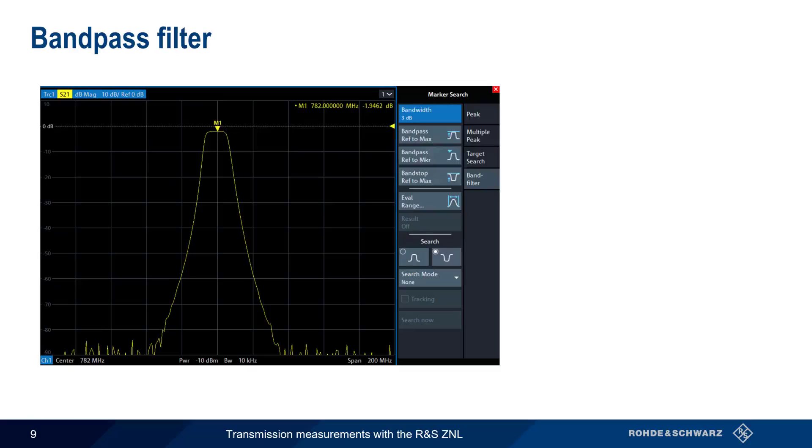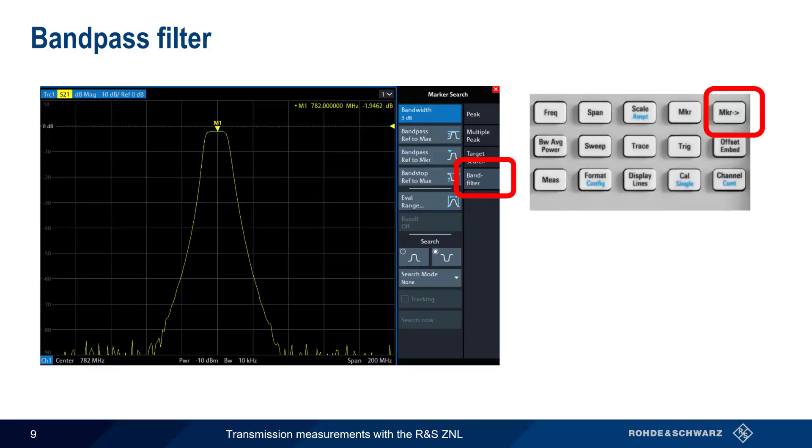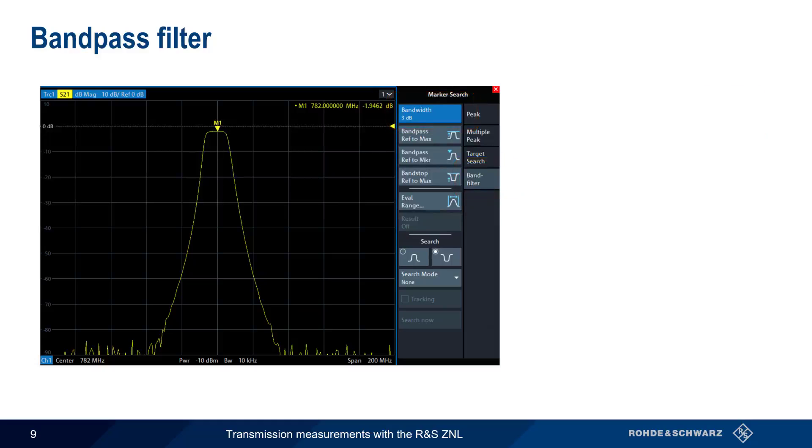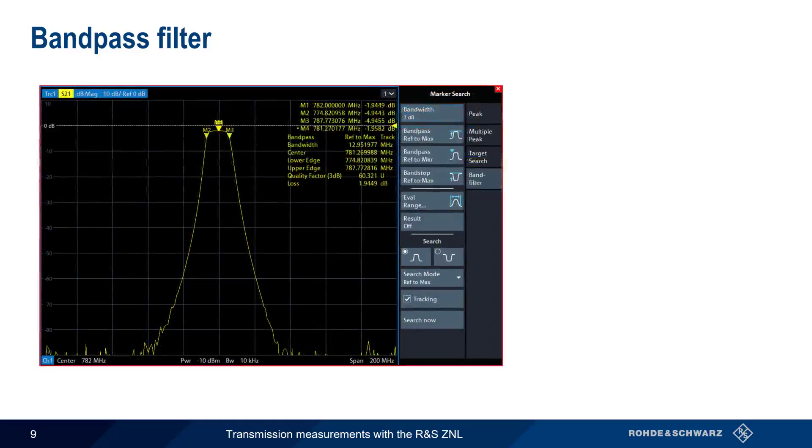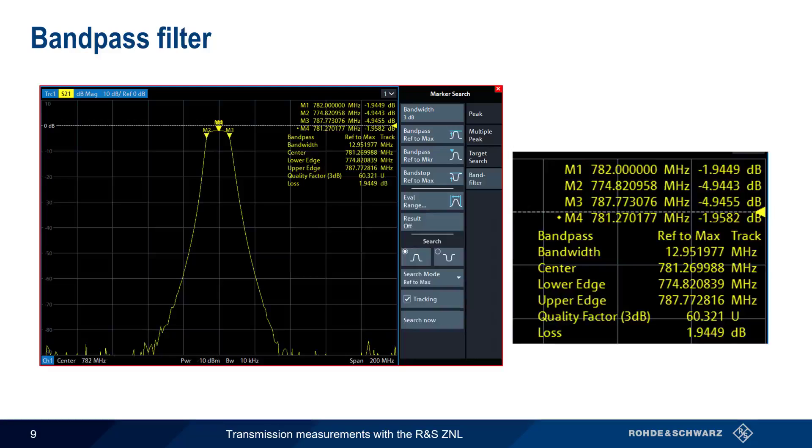A more convenient way of measuring filter parameters is using the ZNL's built-in band filter function, which is accessed using the marker function hard key and the band filter button. After selecting the band filter measurement type, and the filter bandwidth we want to use, the filter parameters are calculated and displayed automatically, including things such as bandwidth, center, quality factor, and loss.